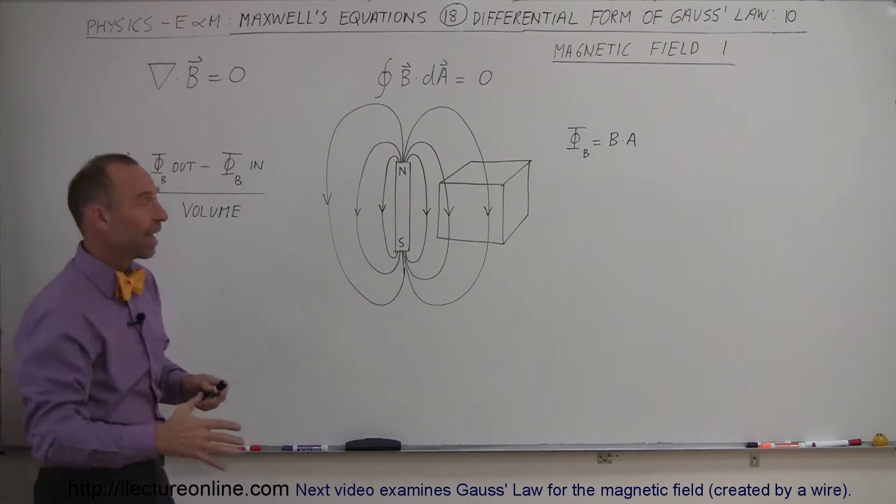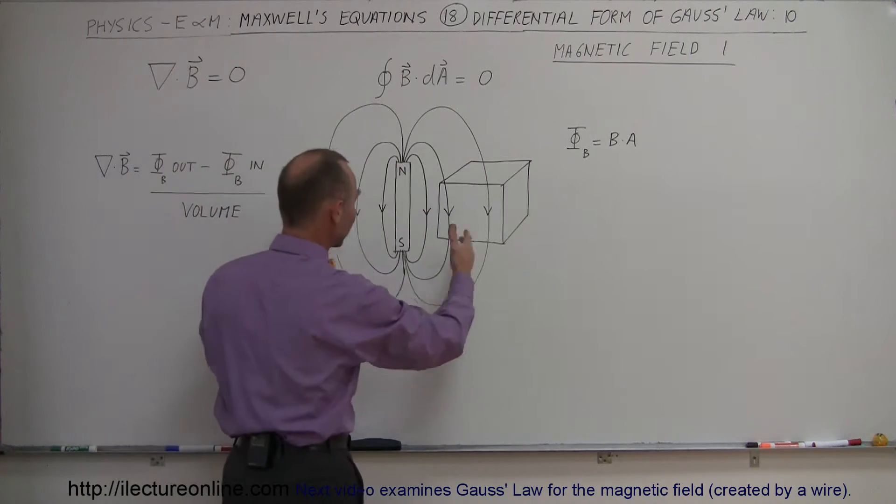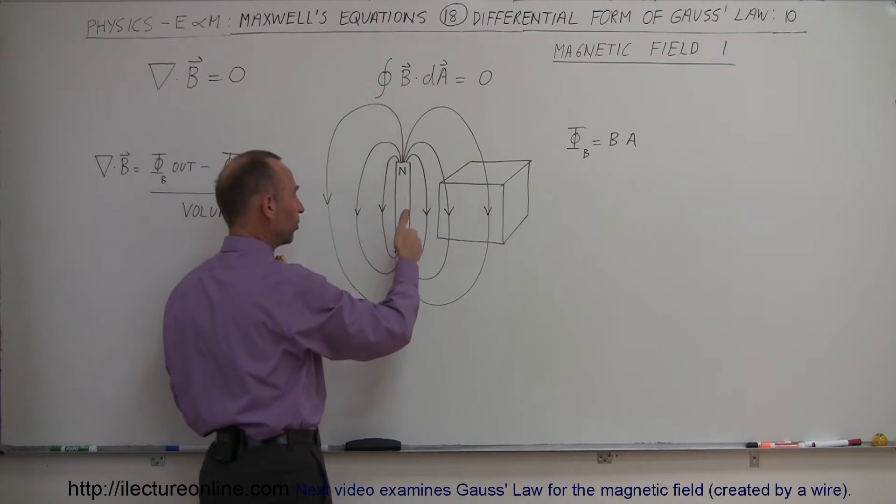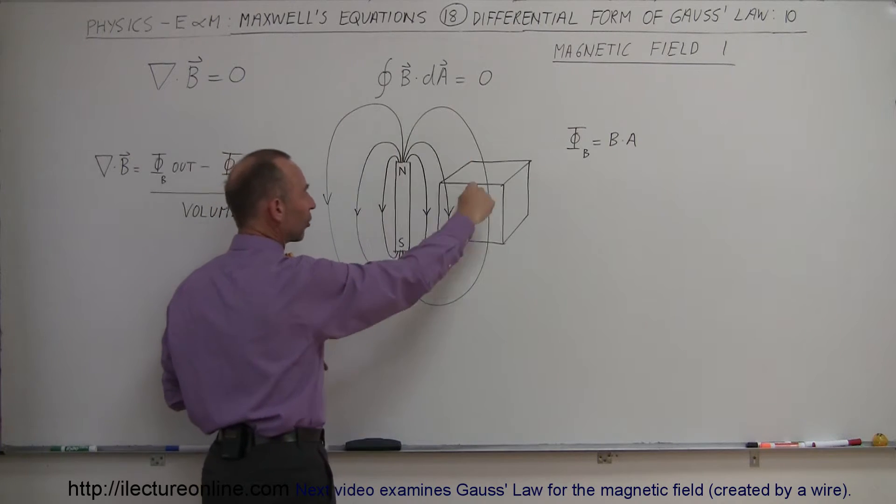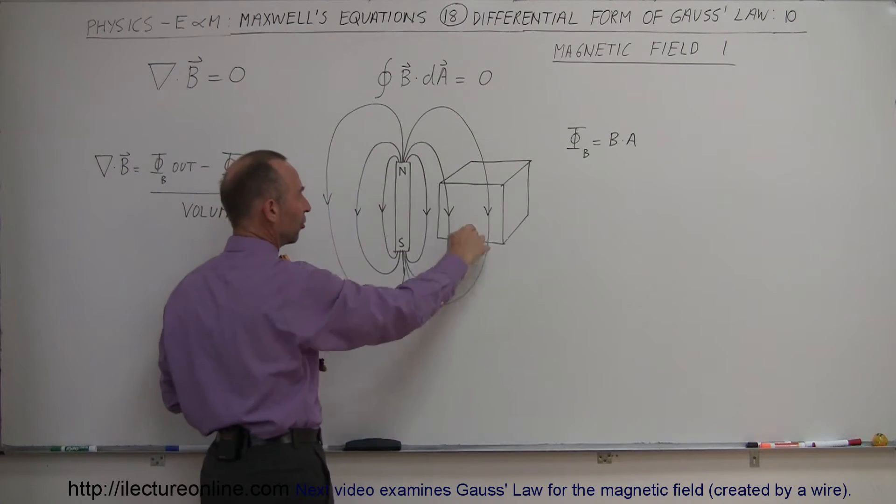So Gauss's Law says that if you have some place where there's a magnetic field, and here we have a magnet with a north pole and a south pole, and magnetic field lines always are directed from the north to the south, like this.